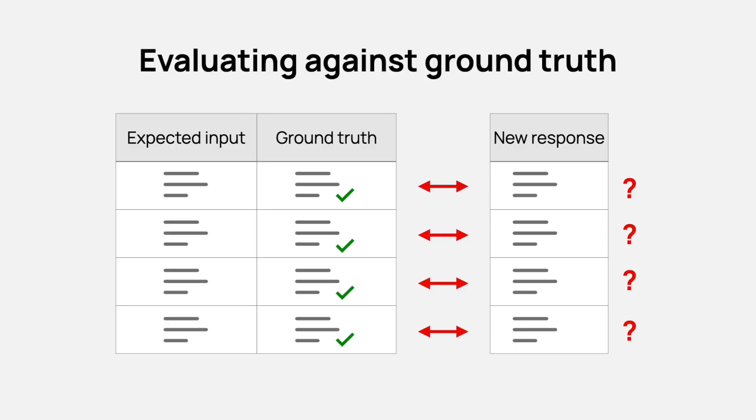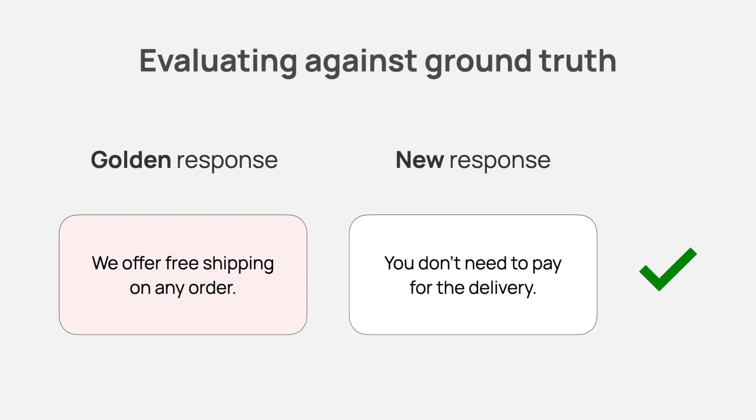Now let's look at the second part, which is the generation. Let's say you found some relevant context and pass it to the LLM to formulate the final response to the user's query — now you need to evaluate if this final response is good. There are two ways to go about it, depending on whether you run evaluations offline or online. When running experiments or regression testing, you can use a ground truth dataset that includes expected questions and good answers, then compare the answers your RAG system gives against these expected ones. You can do this using semantic similarity, or create an LLM judge for correctness, or one specifically for contradictions.